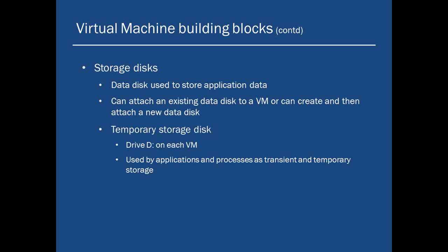From a Windows perspective, the Windows virtual machine will have a C drive which will have all the OS-specific details, and another drive which is a D drive, available on each VM. This is like a swap disk — a temporary disk where your OS, processes, and applications will use it as transient or temporary storage.